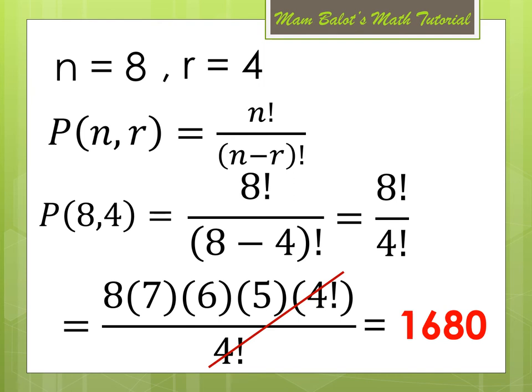So there are 1,680 ways in choosing the top 4 in a racing.